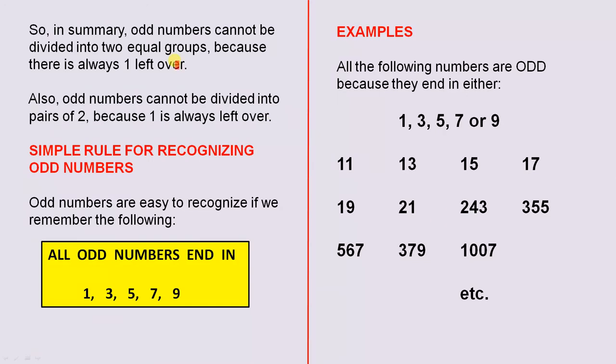So, in summary, odd numbers cannot be divided into two equal groups because there is always one left over. Also, odd numbers cannot be divided into pairs of two because one is always left over.